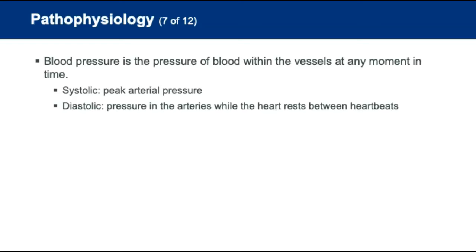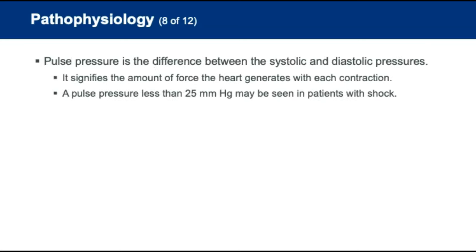Blood pressure is the pressure of blood within the vessels at any moment. Systolic pressure is the peak arterial pressure generated every time the heart contracts. Diastolic pressure is maintained within the arteries while the heart rests between heartbeats. Pulse pressure is the difference between systolic and diastolic — for example, 140 over 80 gives a pulse pressure of 60. A pulse pressure less than 25 mmHg may be seen in patients with shock, such as a blood pressure of 110 over 90 with only a 20-point difference.